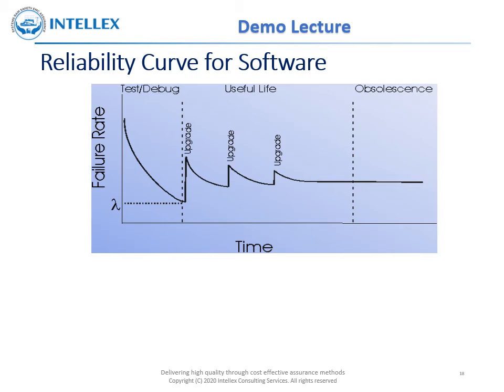In the case of software, the reliability curve takes a different shape as shown in the figure. This is because of the difference in nature of failures of hardware and software. In hardware, random failures caused mainly by environmental stress dominate over systematic failures. Software does not suffer from random failures — failures do not develop over time. There will be design or coding errors in the software which are always present since the design stage, and they surface when favorable conditions and data are present.